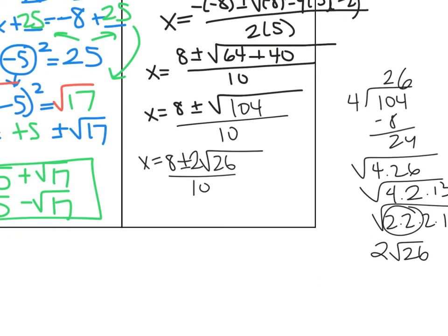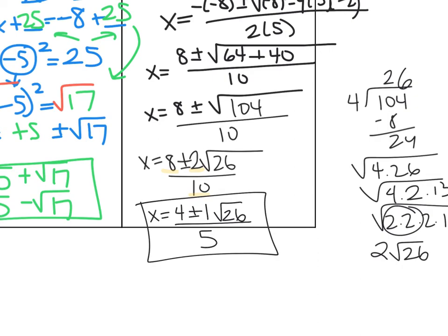We can reduce: 2 divides into 8, 2, and 10. Dividing through by 2 gives x = (4 ± √26) / 5. Remember, you cannot divide into the square root. That's the final answer.